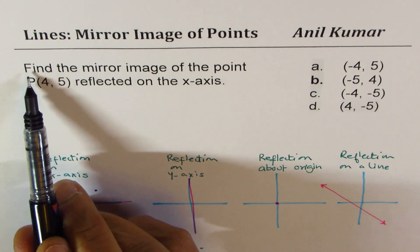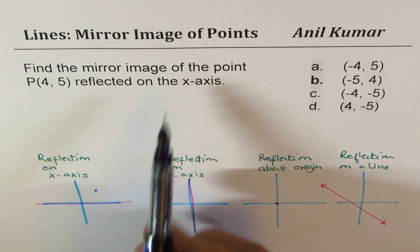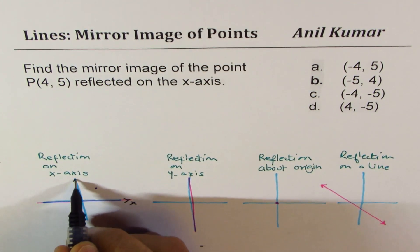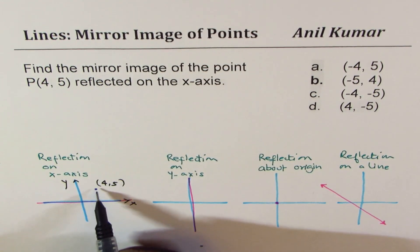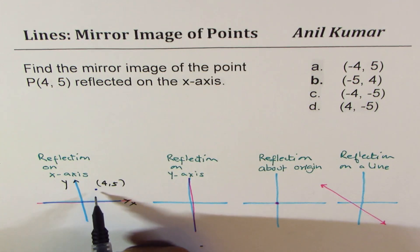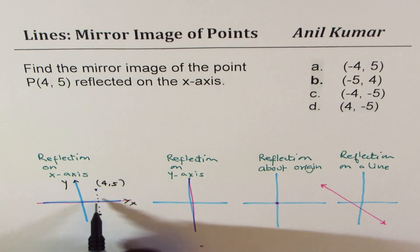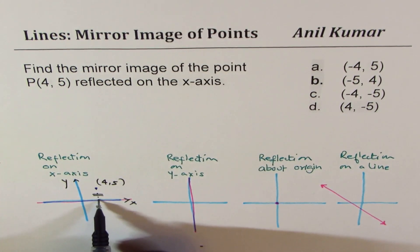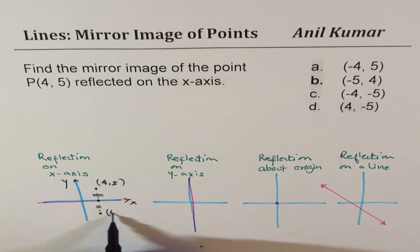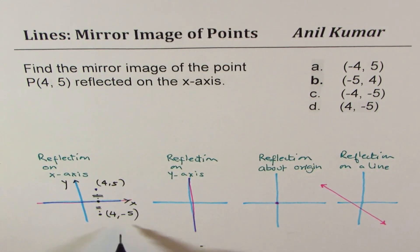The first example: find the mirror image of point (4, 5) reflected on the x-axis. That is your x-axis, and this is the y-axis. This is the point which is (4, 5). When you reflect it on the x-axis, it will be as far behind as it is in front, so you get an image where these two lengths are equal. The x value remains the same; however, the y value becomes negative. So the answer is (4, -5).